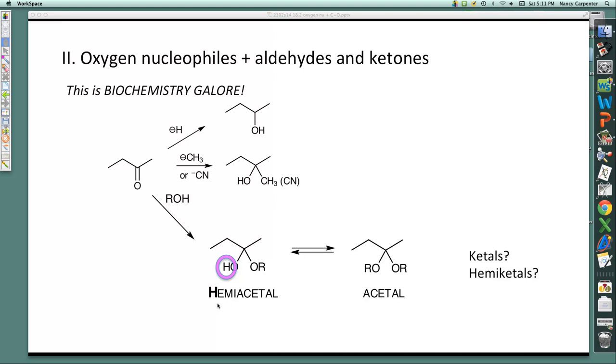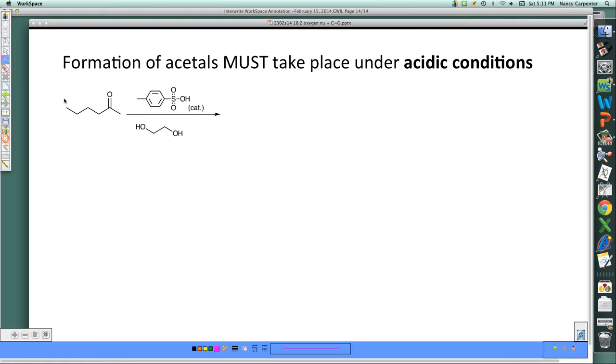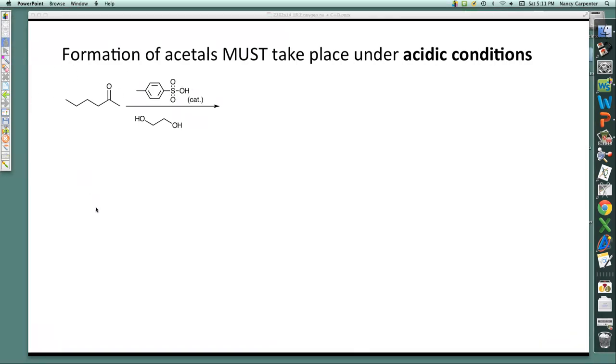This is biochemistry galore. Addition of oxygen nucleophiles to carbonyls gives you these species, these tetrahedral species. Now, a very important point about the addition of these oxygen nucleophiles is that it has to take place under acidic conditions. Basically, it's just not going to work unless there's acid around. So I'm going to run through the mechanism here and point out that this guy is acidic. It's a catalyst that we're using to give this reaction a good boost under acidic catalytic acidic conditions.